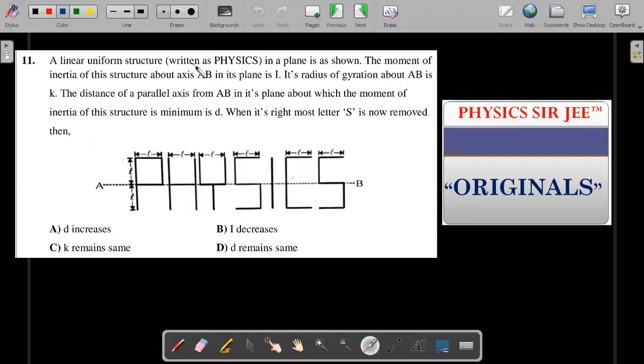A linear uniform structure written as physics in a plane is as shown. So all these are linear and everything is at 90 degrees as you could see. The moment of inertia of the structure about axis AB in its plane is capital I. So this word being divided into two parts by this axis AB and moment of inertia about this axis is I. Its radius of gyration about AB is K. The distance of parallel axis from AB in its plane about which the moment of inertia of the structure is minimum is D.